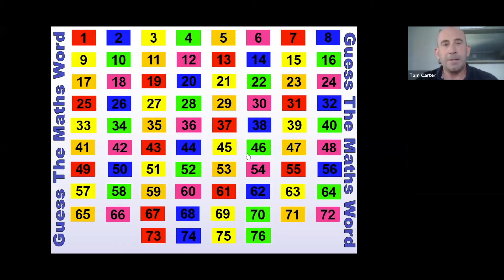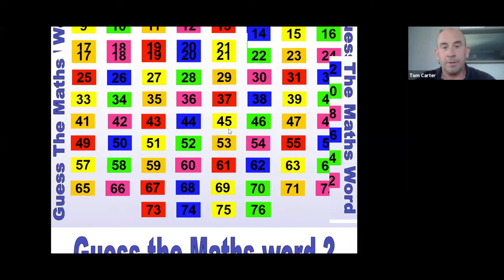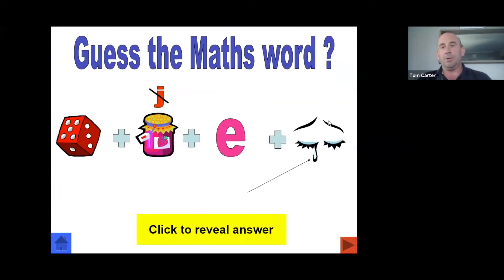Right, here we go. So this is simply going to be guessing the maths words. Dingbats is essentially a mathematical word or something that's loosely related to maths, and you have to put the parts of the symbols together to make a word or guess at what the word is. So have a try.